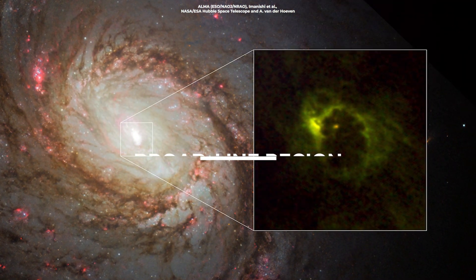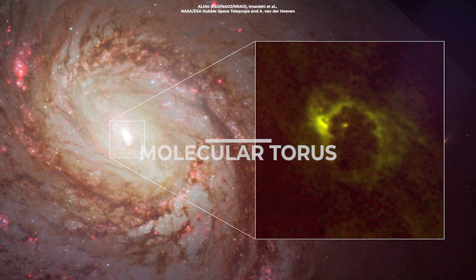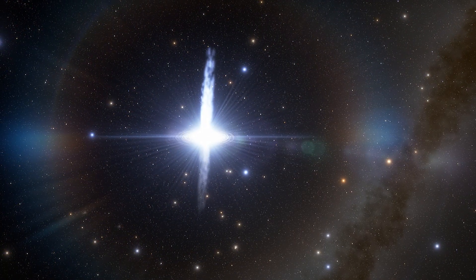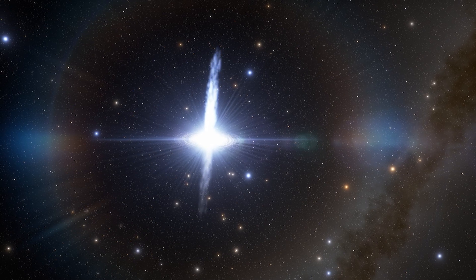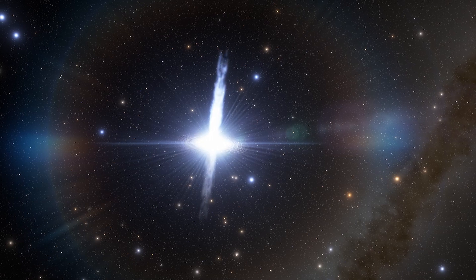The leading candidates are the broad-line region and the molecular torus, which orbit black holes and are made of gas and light. By releasing some of its energy, a black hole's jet has the potential to convert visible and infrared light in any region into high-energy gamma rays.